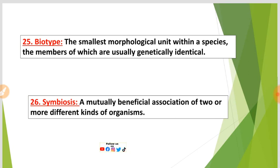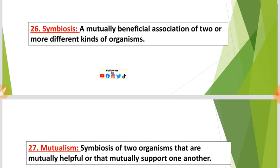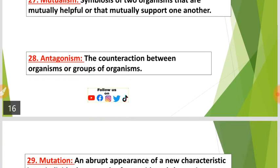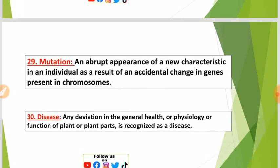Number twenty-six: Symbiosis — a mutually beneficial association of two or more different kinds of organisms. Number twenty-seven: Mutualism — the symbiosis of two organisms that are mutually helpful or that mutually support one another. Number twenty-eight: Antagonism — the counter action between organisms or groups of organisms.